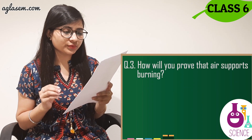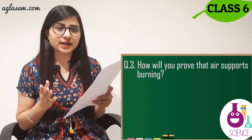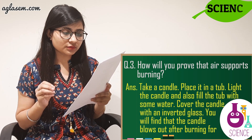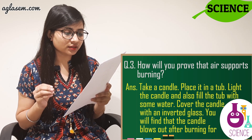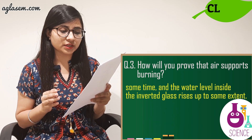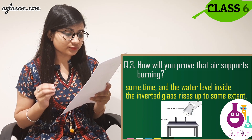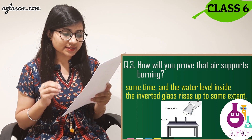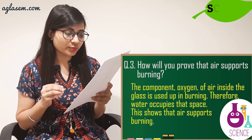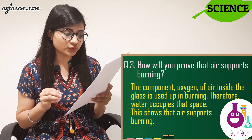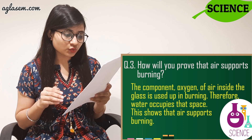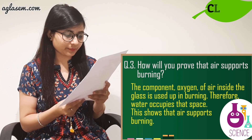Question number 3: How will you prove that air supports burning? The answer is: take a candle and place it in a tub. Light the candle and fill the tub with some water. Cover the candle with an inverted glass. You will find that the candle blows out after burning for some time, and the water level inside the inverted glass rises up to some extent. The component oxygen of air inside the glass is used up in burning; therefore water occupies that space. This shows that air supports burning.